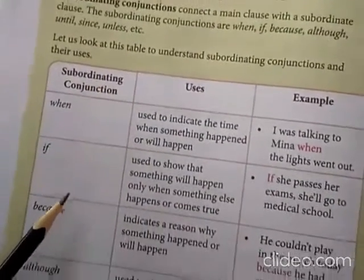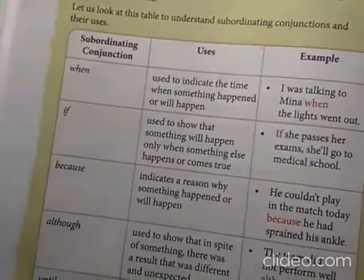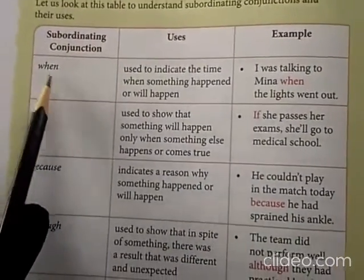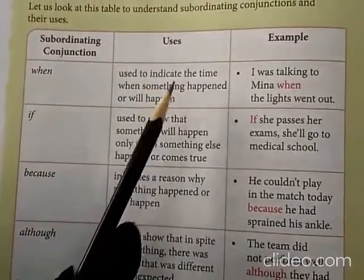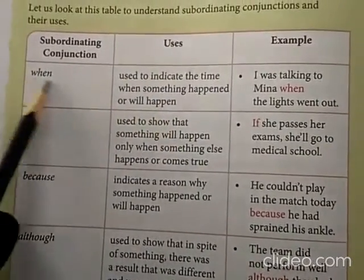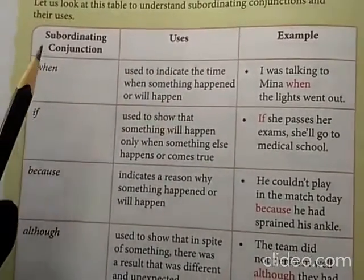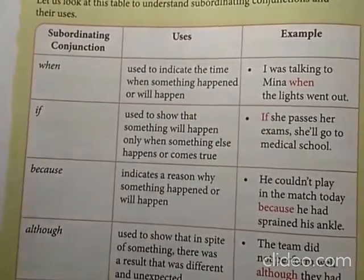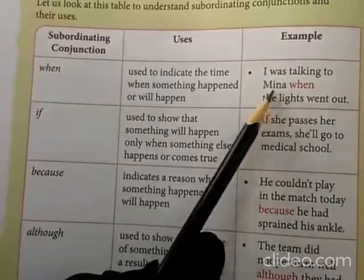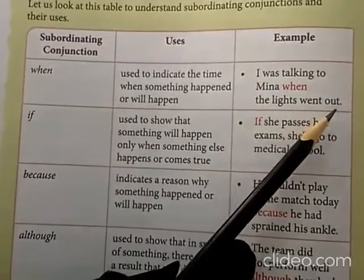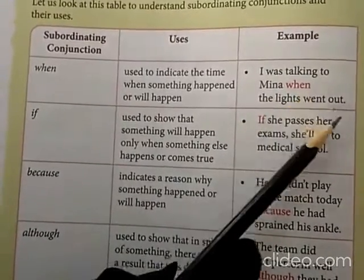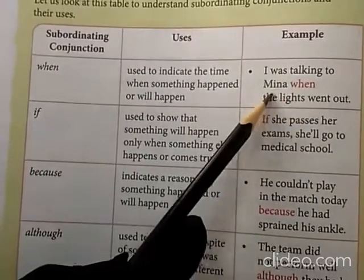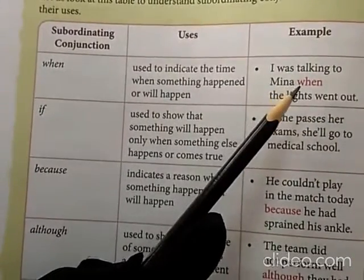Let's see how they are used. 'When' is used to indicate the time when something happened or will happen. For example: I was talking to Mina when the lights went out. So you are talking about a specific time — when the lights went out.